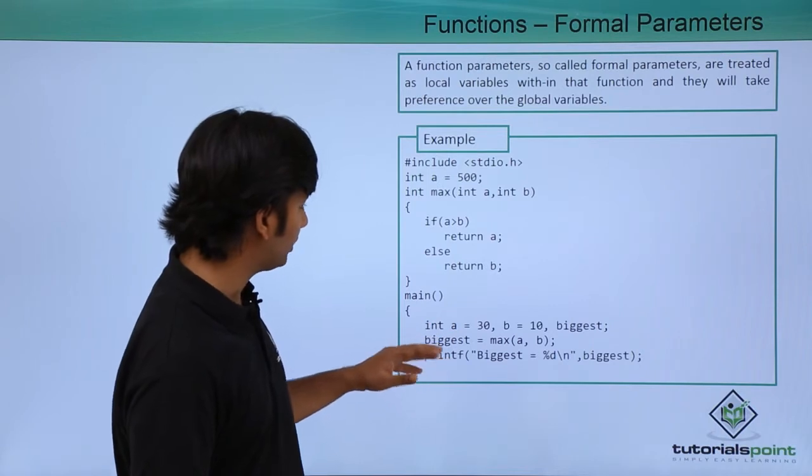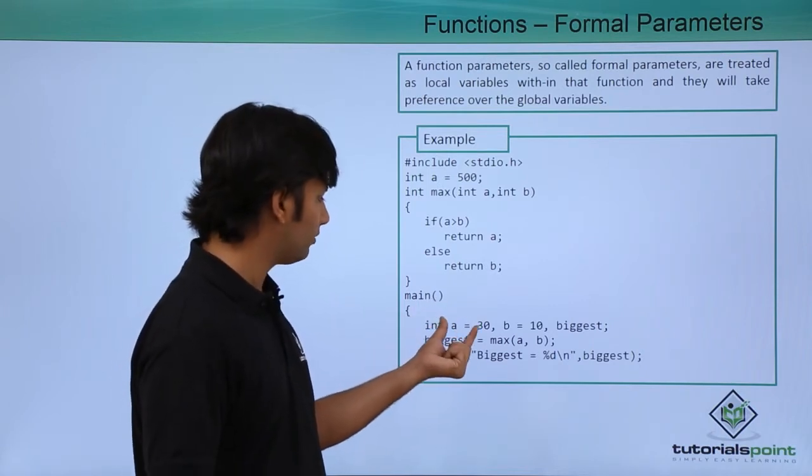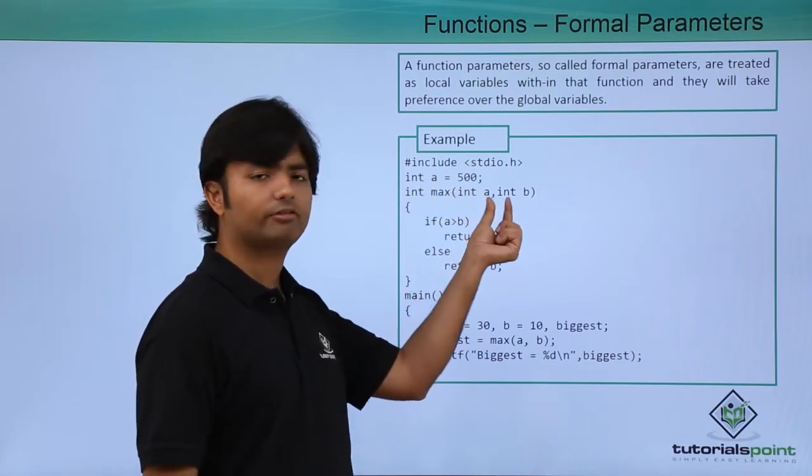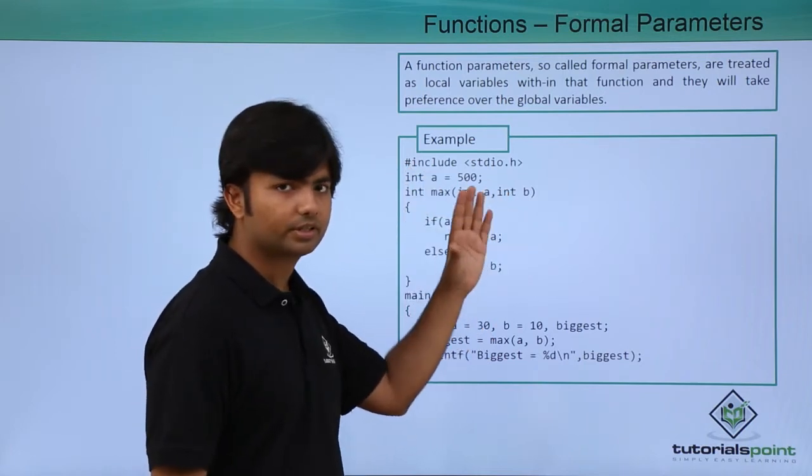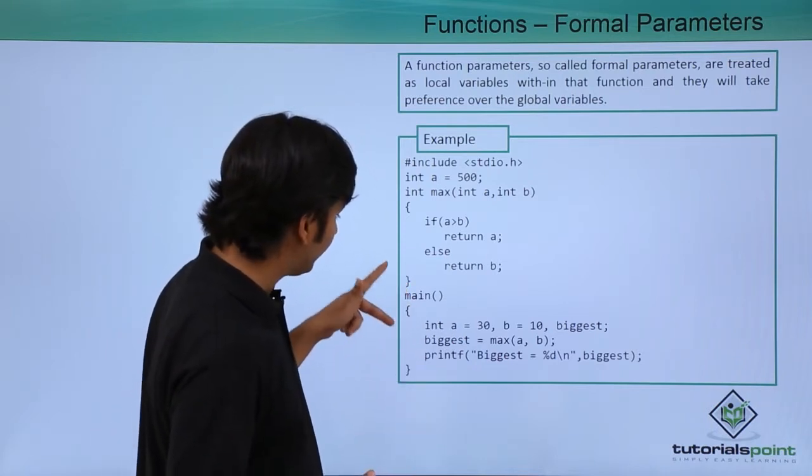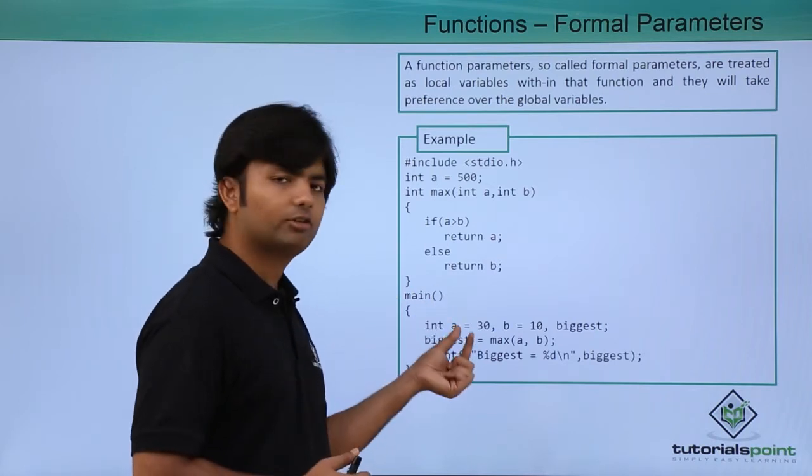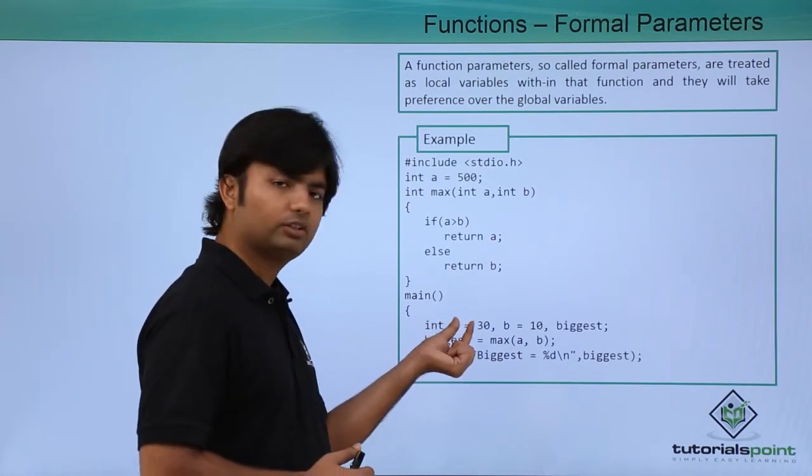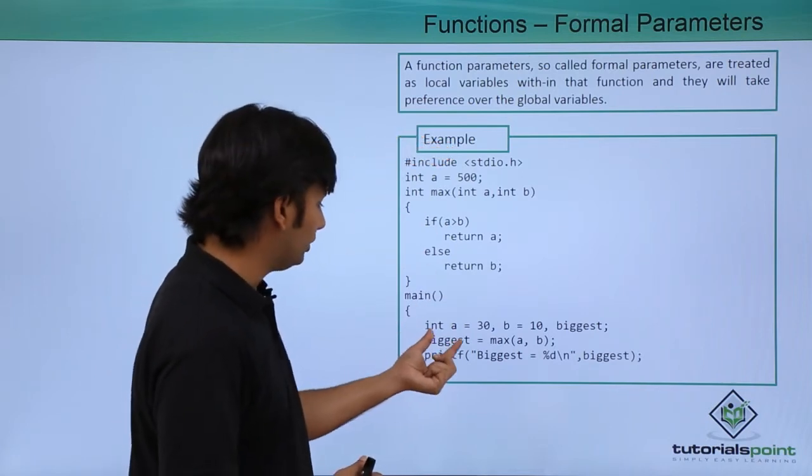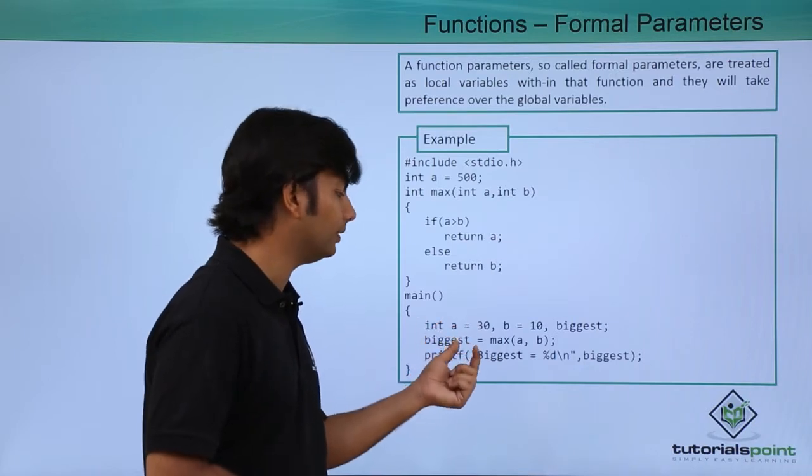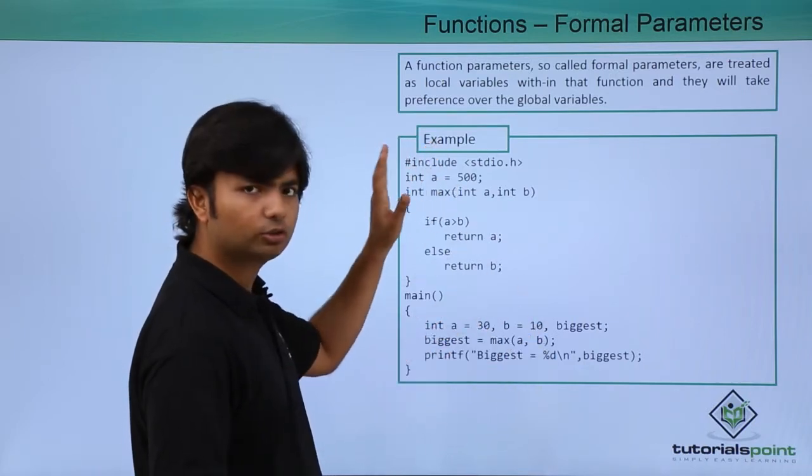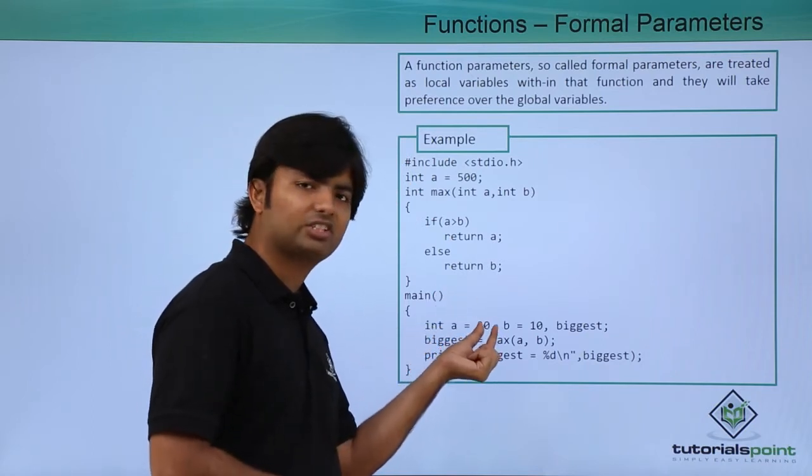Here in this example, we have a local variable a, the global variable a, and the formal parameter a. Let's see how the value will be traversing. Inside this particular method, we have a copy of a which will take this local variable, because out of the local and global, this is more specific to the main method. When you say a, it will not carry the value of this global variable, rather it will take the value of this a which is 30.